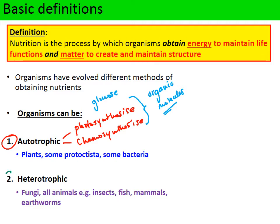Heterotrophs are quite different because they cannot make complex organic molecules, so they have to consume them as part of their diet. These include all fungi such as yeast cells, which are unicellular fungi — they have to take in glucose from their environment. All animals are heterotrophs; they cannot photosynthesize or chemosynthize. Animals include things like insects, fish, mammals, and earthworms — they also cannot make their own complex organic molecules, so they have to take them in as part of their diet.